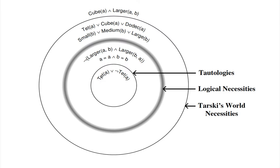We return to our graphic and see that the outermost circle involves Tarski's World necessities. Tarski's World is a program that presents a very limited number of possible shapes and sizes — any possible object is restricted to being small, medium, or large, and to being either a tet, a cube, or a dodecahedron. If we create an object in Tarski's World, it must be some combination of those, and if it has a name, it will have one of six letter names as individual constants.